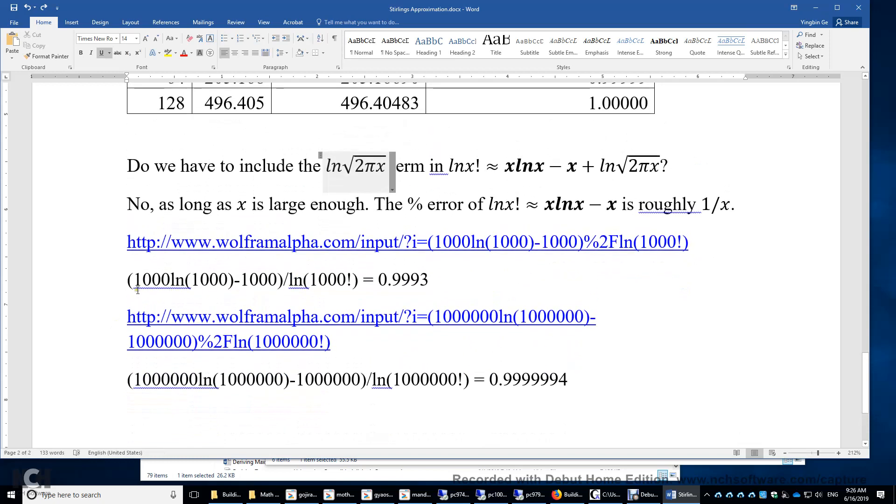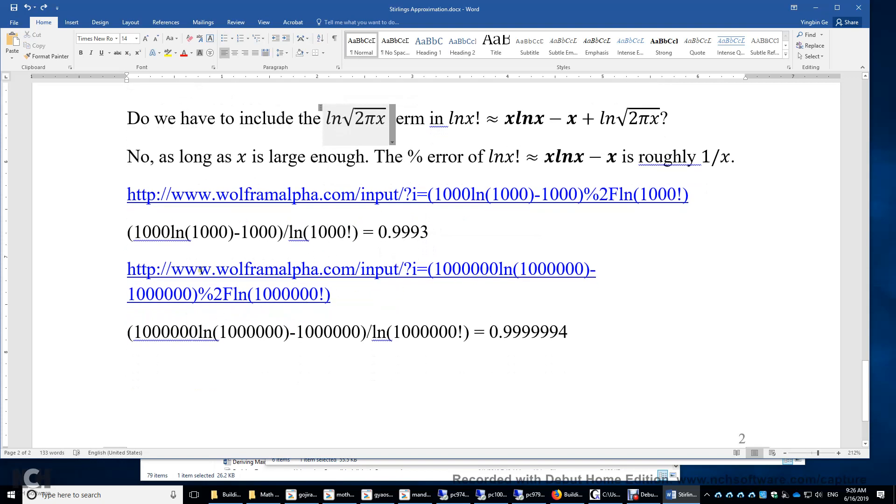So I used Wolfram Alpha to compute this ratio here. Again, on top, this is my approximation, ln x times x minus x, divided by ln x factorial, and x is 1000. Look at this. The percent error is pretty small. So what if x equals 1 million? Again, using Wolfram Alpha, you can see if x equals 1 million, the ratio is 0.9999994. You have six nines here. So again, the percent error is negligible when x equals 1 million or even 1000.